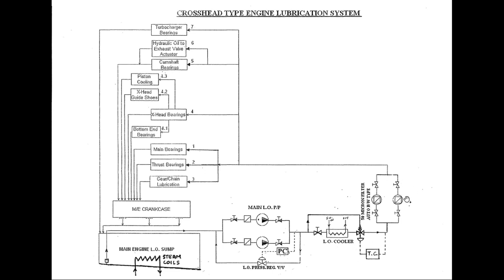The lube oil fine filter is a 30 to 50 micron auto backwash type. A duplicate filter is provided so the filter can be cleaned during engine running without having to stop the engine. Thereafter, oil goes to various places as shown in the figure, including main bearings, thrust bearing, and gear and chain lubrication.